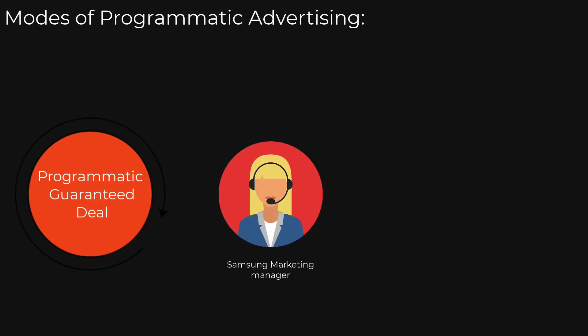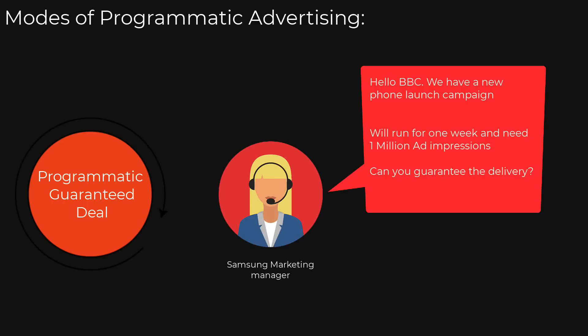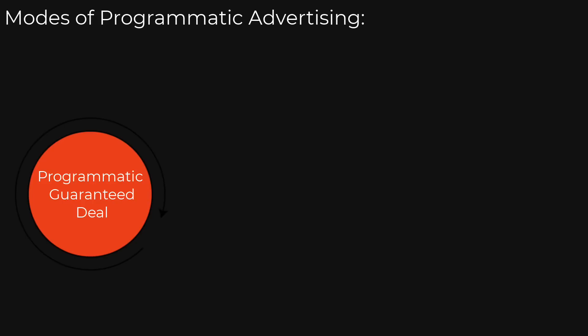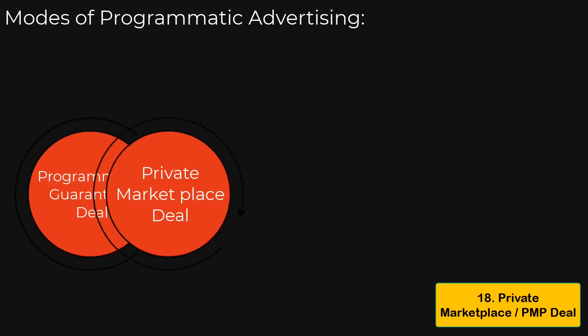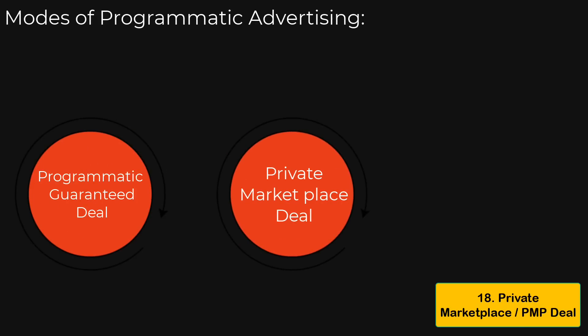When the publisher commits to this quantity, it's a programmatic guarantee deal. For example, Samsung goes to BBC.com and says: we have a new phone launch campaign, and for seven days from this date to this date we want one million impressions on your website. If BBC agrees, that is a programmatic guarantee deal. But in certain cases, the advertiser does not want to commit to a number of impressions or views, and they agree to buy and sell whenever the advertiser wants.